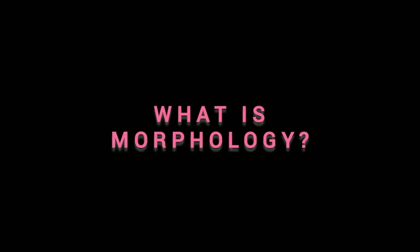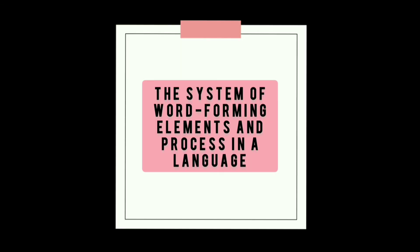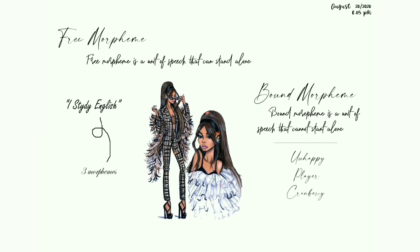Morphology. What is Morphology? Morphology is the system of word-forming elements and processes in a language. The elements of meaning are called morphemes. A morpheme is the smallest unit of speech sound, and it can be divided into two types: Free Morpheme and Bound Morpheme. A Free Morpheme is a unit of speech that can stand alone — for example, the sentence 'I study English' has three morphemes. A Bound Morpheme is a unit of speech that cannot stand alone — for example: unhappy, player, cranberry.